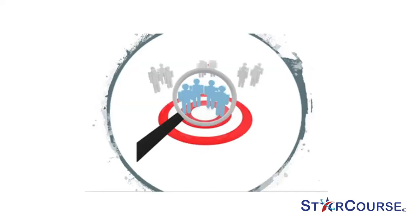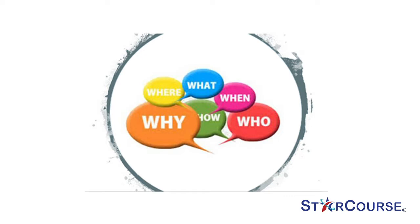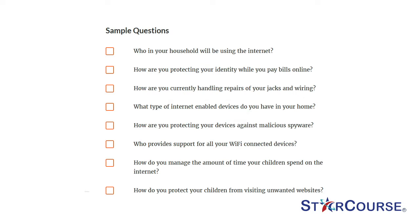Understanding your customer's Internet usage in the home will help you ask questions that lead to a solid recommended solution. Target customer examples include: working from home, digital learning, shopping and paying bills online, using streaming services, and playing video games online. Below is a sampling of questions that may uncover needs for the Kinetic Secure Packs: Who in your household will be using the Internet? How are you protecting your identity while you pay bills online? How are you currently handling repairs of your jacks and wiring? What type of Internet-enabled devices do you have in your home? How are you protecting your devices against malicious spyware? Who provides support for all your Wi-Fi-connected devices? How do you manage the amount of time your children spend on the Internet? How do you protect your children from visiting unwanted websites?